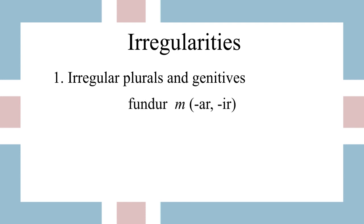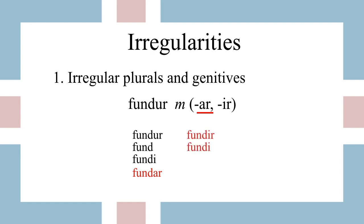There can also be irregular genitives. For example, for the word 'funtur' we would expect the genitive to be 'funts' with an -s, but in the parentheses we see an -ar ending, which means the genitive is actually 'funtar'. This word also has the -ir plural: we have 'funtir' and 'funti', and then the other two forms are normal.